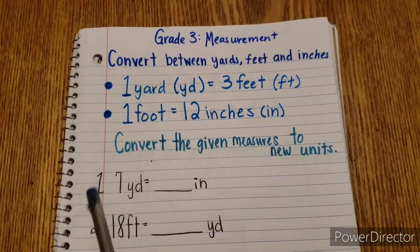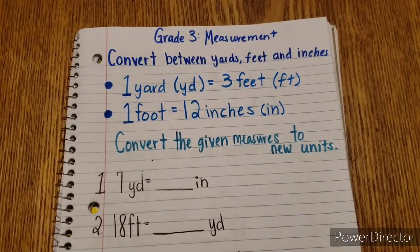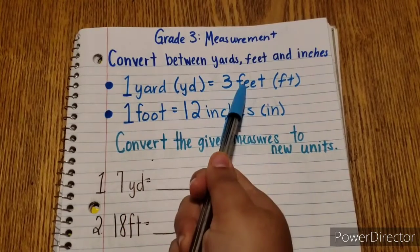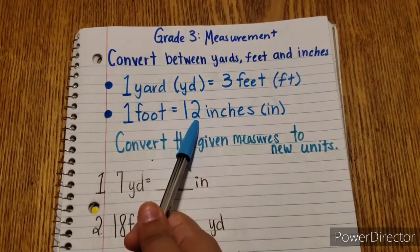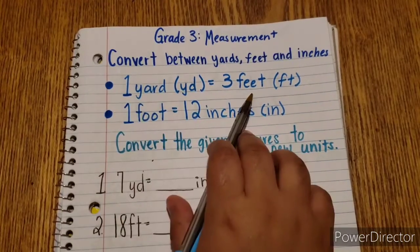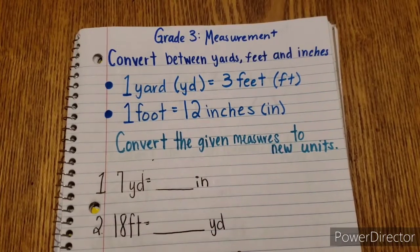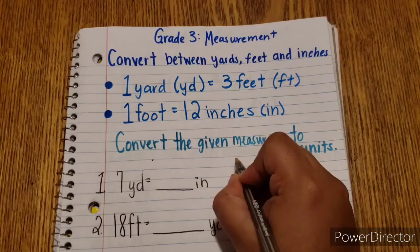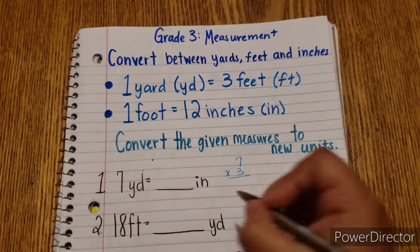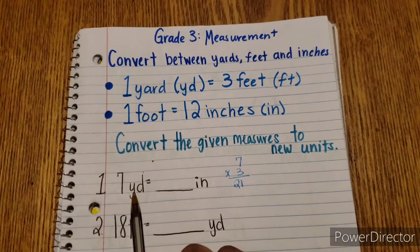Let's start with number 1. We have 7 yards and we want to get inches. First we're going to go from yards to feet, then from feet to inches. So let's go from yards to feet. If 1 yard equals 3 feet, how many feet are there in 7 yards? We would do 7 times 3, and that is 21. So there are 21 feet in 7 yards.